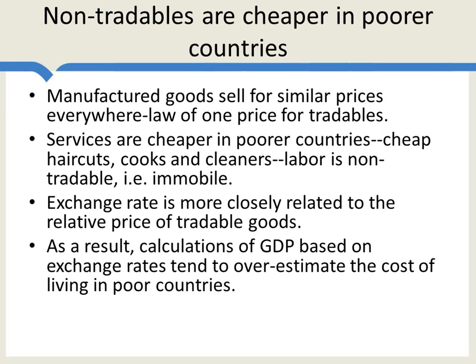So as a result of this, calculations of GDP based on exchange rates tend to overestimate the cost of living in poorer countries, because they take into account that tradables are about the same price, but not that non-tradables are cheaper in poorer countries. This is called the Balassa-Samuelson effect, and you can find more about it by listening to the video on Balassa.